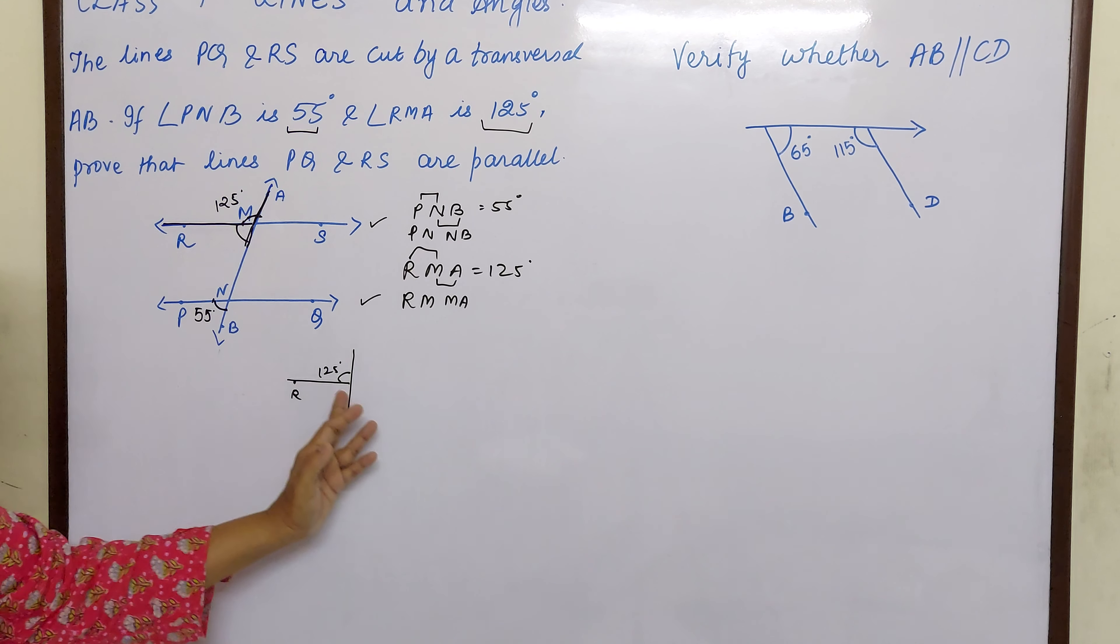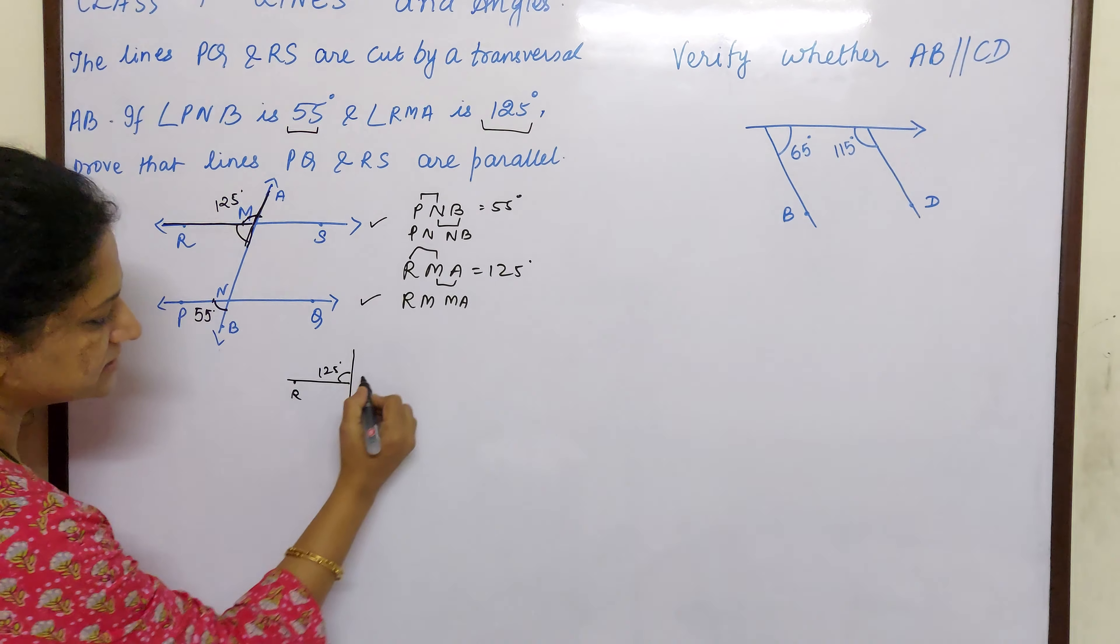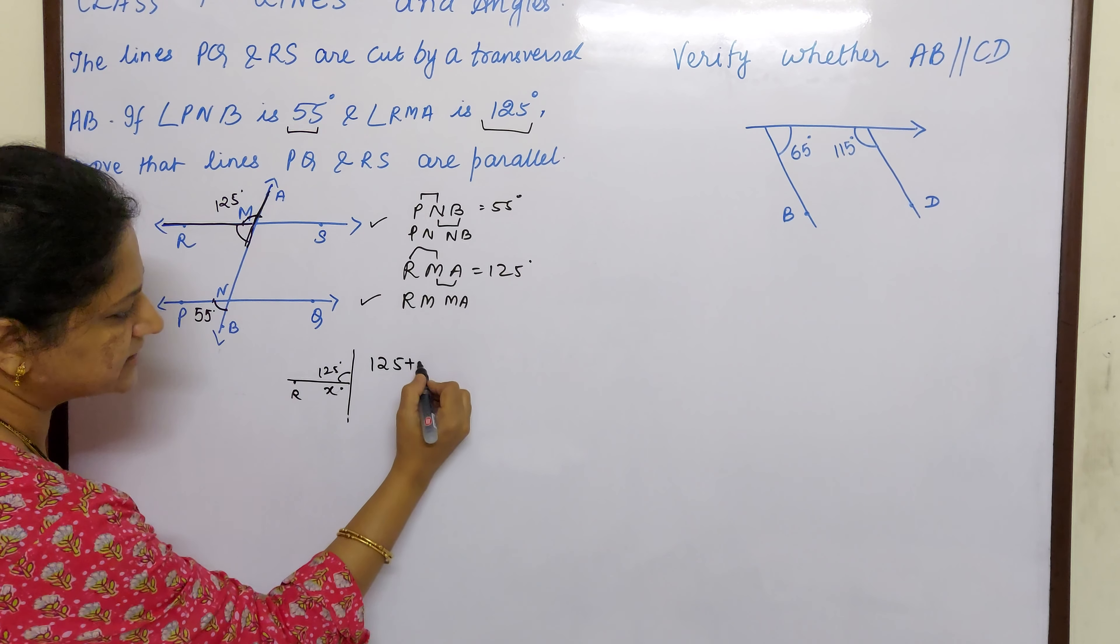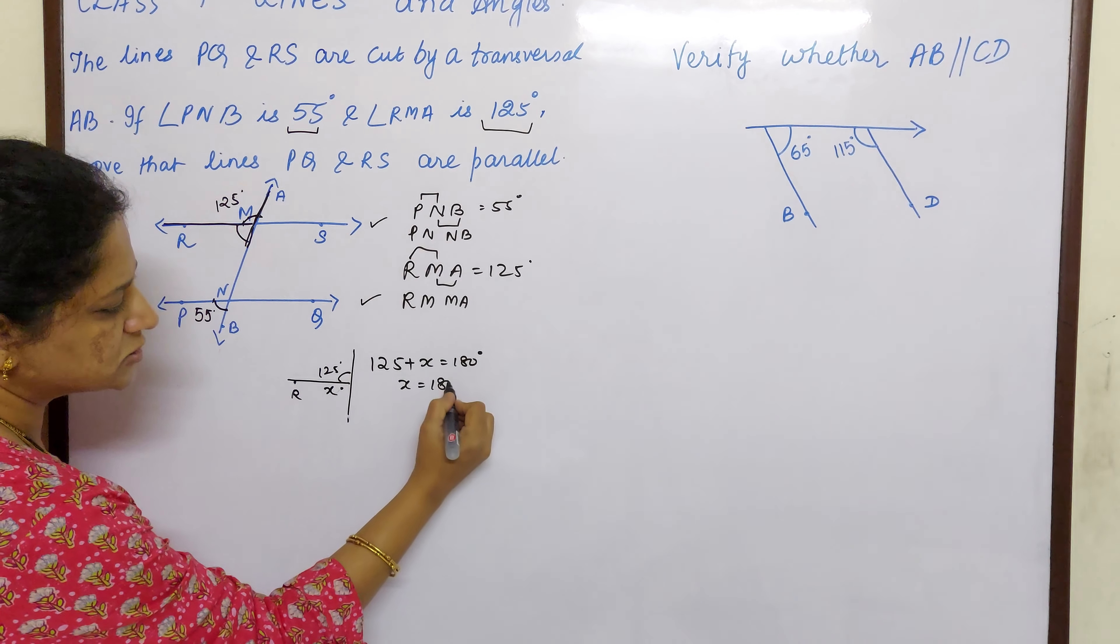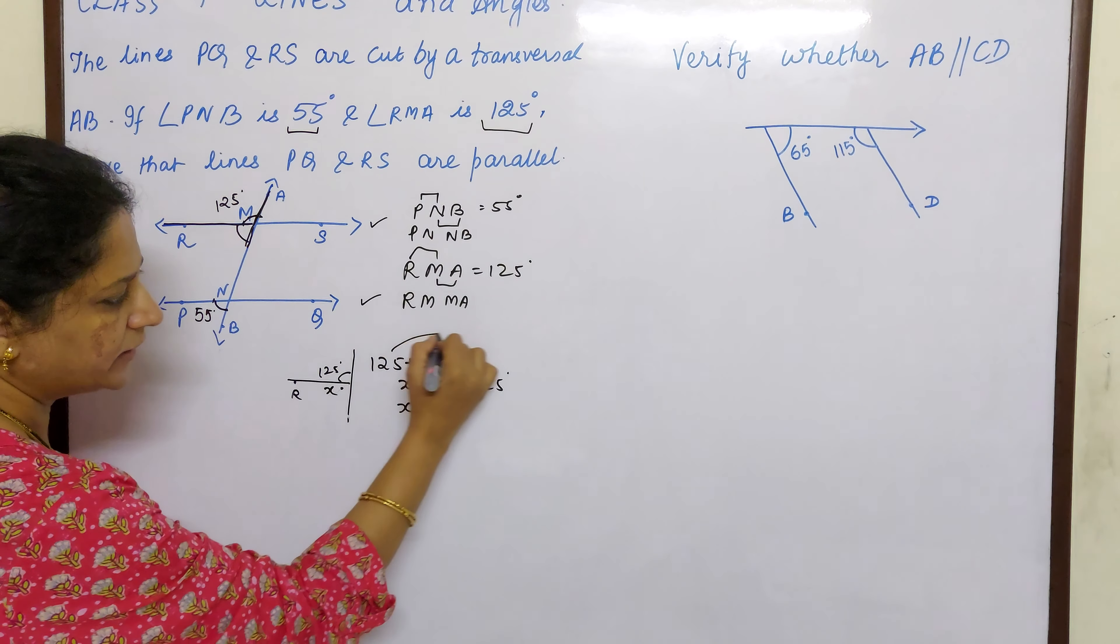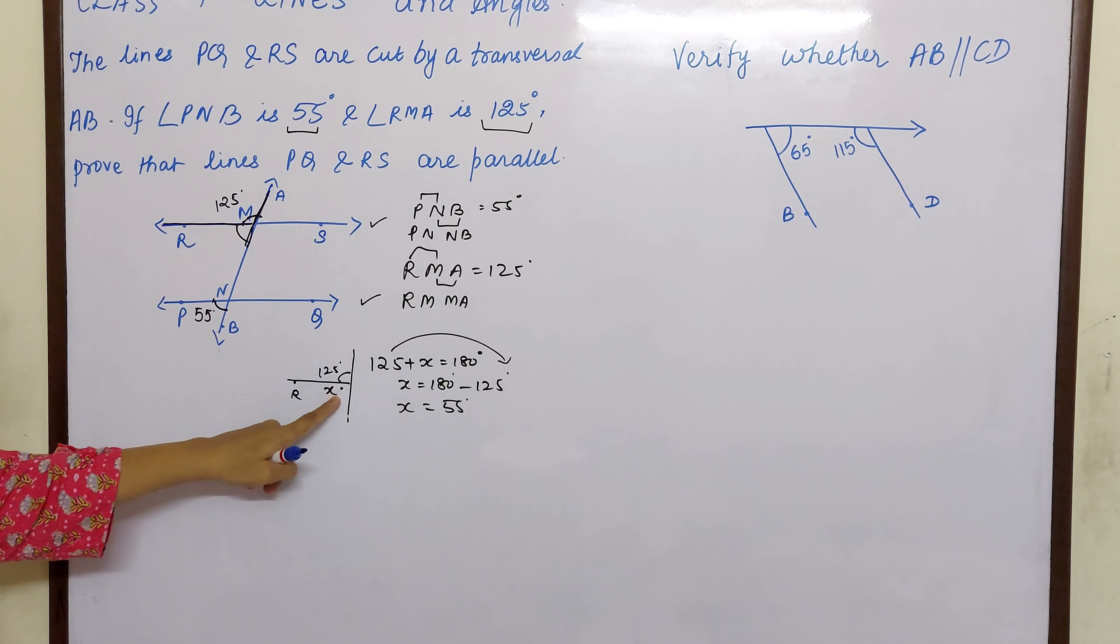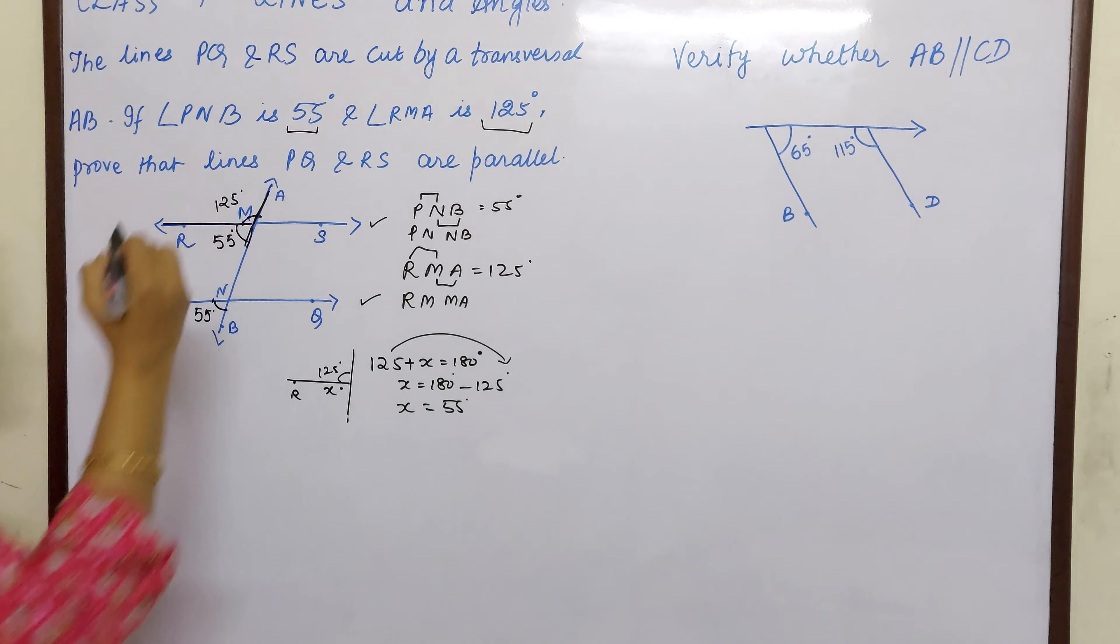That if there is a ray standing, then they form a linear pair. Yes. So if this is 125 plus, let us assume this as x. So plus x should be 180 because they form a linear pair. So x is equal to 180 minus 125. And x is 55. So this x is 55. That means this is 55 degrees.